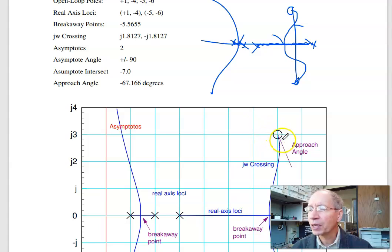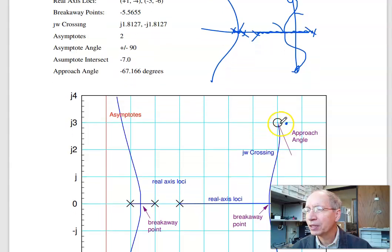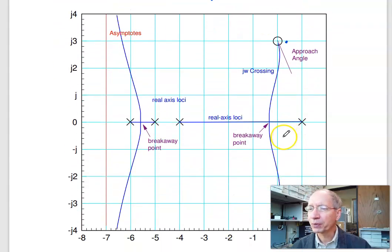So that's the approach angle. Since this is a zero, I multiply or add. I need to add negative 67 degrees to get it to add up to 180. So I come into this zero at minus 67 degrees. And there's your root locus.